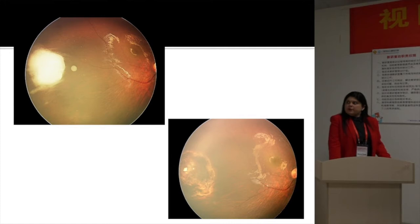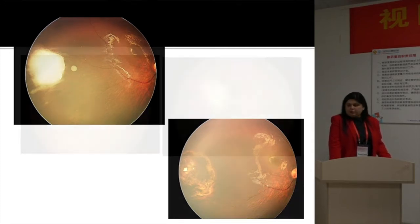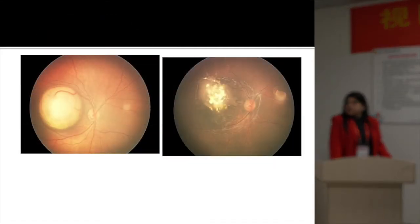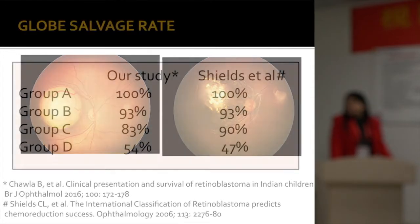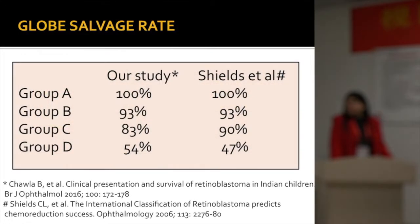This is one tumor where you want to see a good response with this kind of combination therapy — systemic chemotherapy as well as focal therapy. This is another tumor; you can see that the macula was involved, and after treatment the tumor has shown a nice regression with combination therapy.